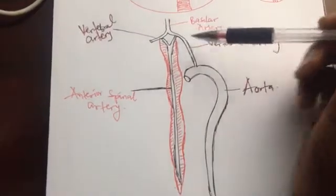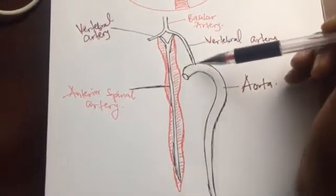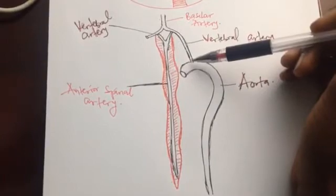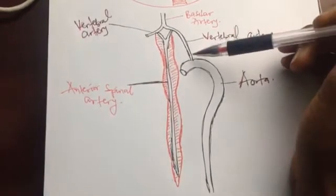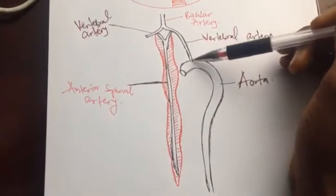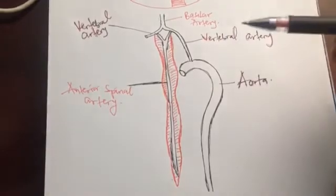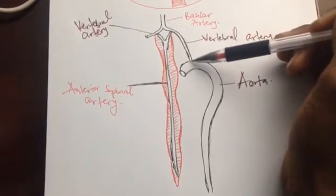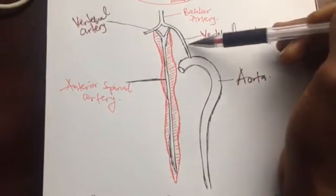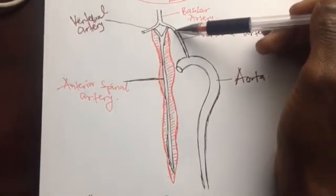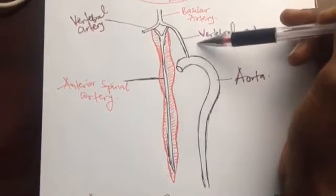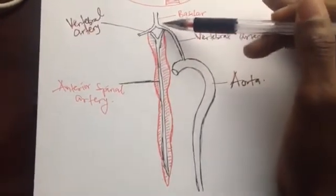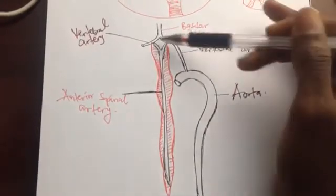So this is the aorta, this is the arch of the aorta, and this is the vertebral artery. This is a schematic diagram because the vertebral artery branches out from the subclavian artery, not directly from the arch of the aorta. But to keep the drawing simple, since the subclavian artery emerges from the arch of the aorta, I just placed it there. The two vertebral arteries — one on the left, one on the right — fuse to form the basilar artery, which enters into the skull.